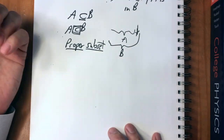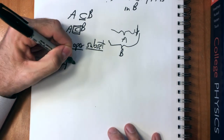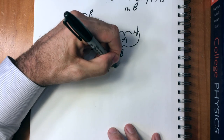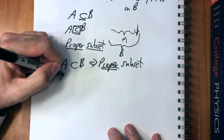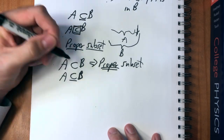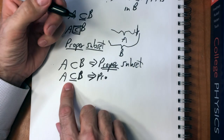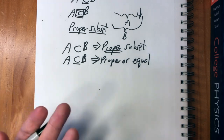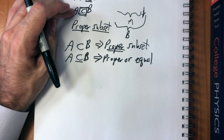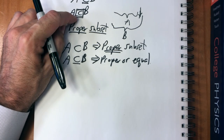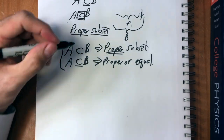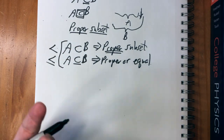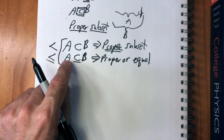The other way is to use this symbol to mean proper subset, and then if you want to say it might be a proper subset or they might be equal, you use basically this plus an equal sign — proper or equal. Both have advantages. I'm going to use the second way because then there's an analogy between less-than and less-than-or-equal: A as a proper subset is less than B, whereas this symbol means it might be less than or equal to.